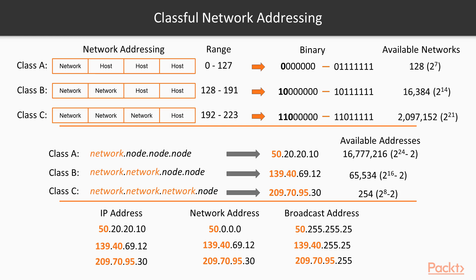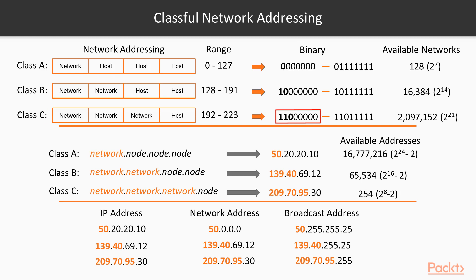Why did the designers structure it this way? The short answer is speed and efficiency. By dividing the 32-bit address space into classes, the router can make fast decisions. In a class A network, the first bit of the first octet is always 0. In class B, the first two bits are 1 and 0. In class C, the first three bits are 1, 1, 0. So when a router begins to decide where to route a packet, it looks at only the first couple of bits and immediately knows which network the packet belongs to. This gives us 128 networks for class A, 16,384 for class B, and 2,097,152 for class C.